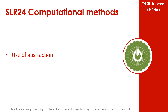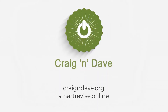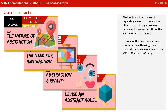In this video, we take a look at the use of abstraction. Abstraction is the process of separating ideas from reality — in other words, hiding unnecessary details and showing only those that are important in context. It's one of the five cornerstones of computational thinking, and we've covered it already in more detail in our videos from SLR 18, Thinking Abstractly.